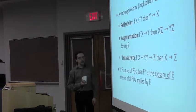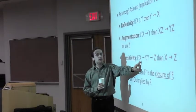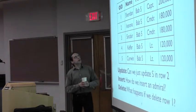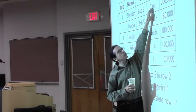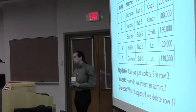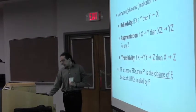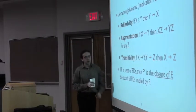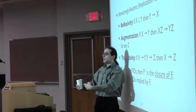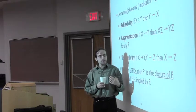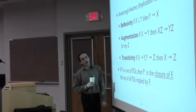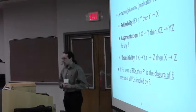And then there's transitivity: if you have a functional dependency from X to Y, and another from Y to Z, then you also have a functional dependency from X to Z. For example, if you have a functional dependency from OID to rank, and from rank to salary, then you also have a functional dependency from OID to salary. These rules allow us to derive a new set of functional dependencies. Given a set F, we can derive all applications of these rules — we call that F-plus, or the closure of F.